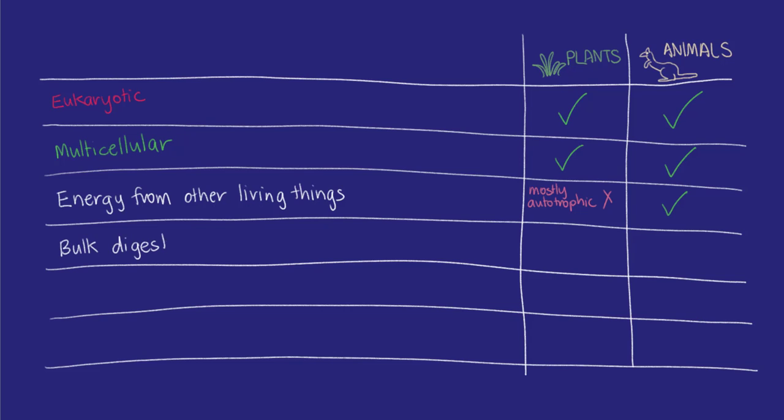They also need some way of removing what they don't need, which can leave the cells and be transported away. Because animals are big, complex, multicellular eukaryotes,